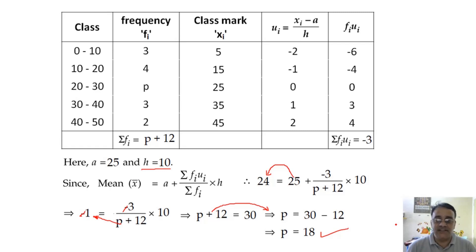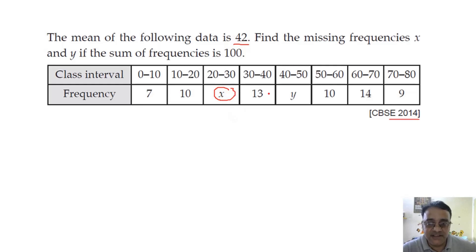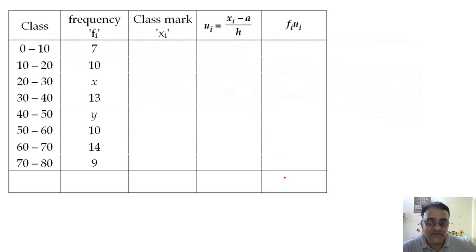Now one more example with two missing frequencies. This is a CBSE 2014 question. The mean of the following data is given as 42, with two missing frequencies x and y, and the sum of all frequencies is 100. So 7 + 10 + x + 13 + y + 10 + 4 + 9 = 100.